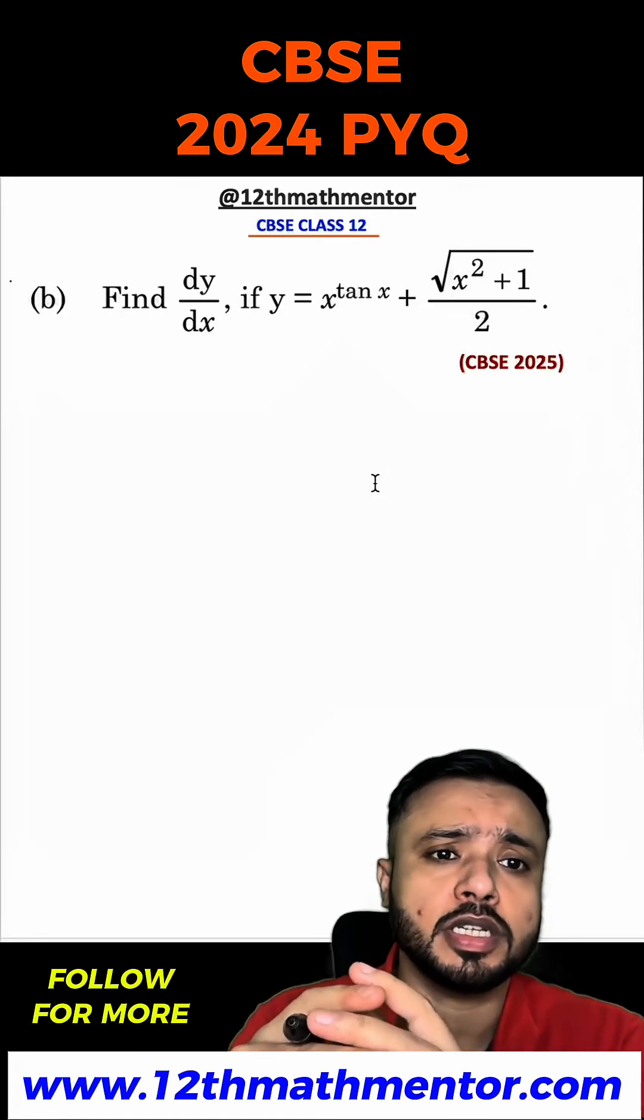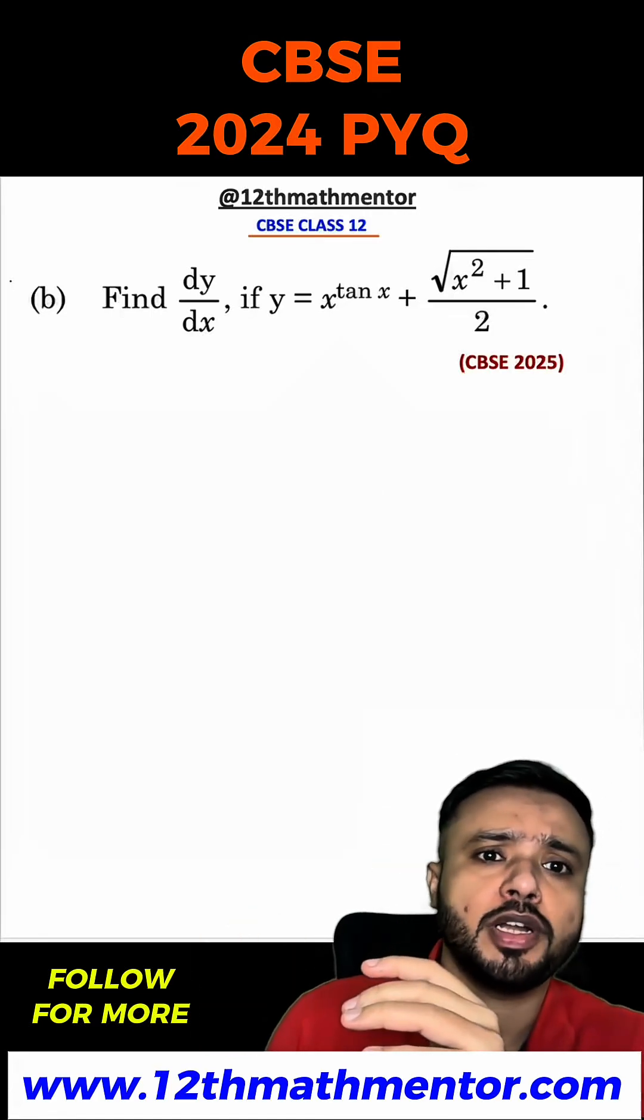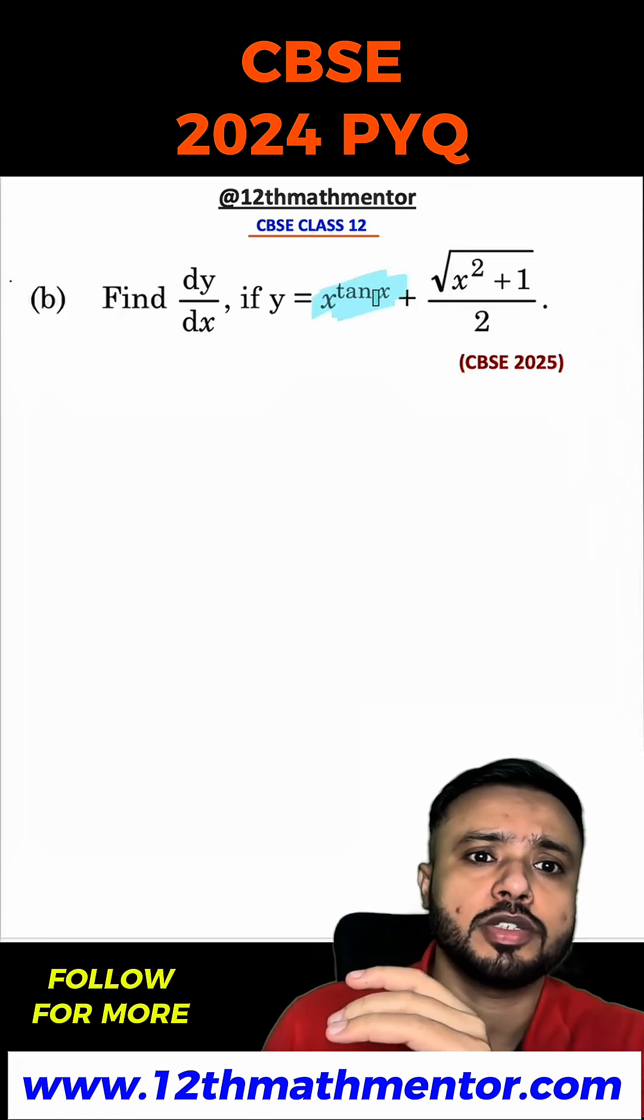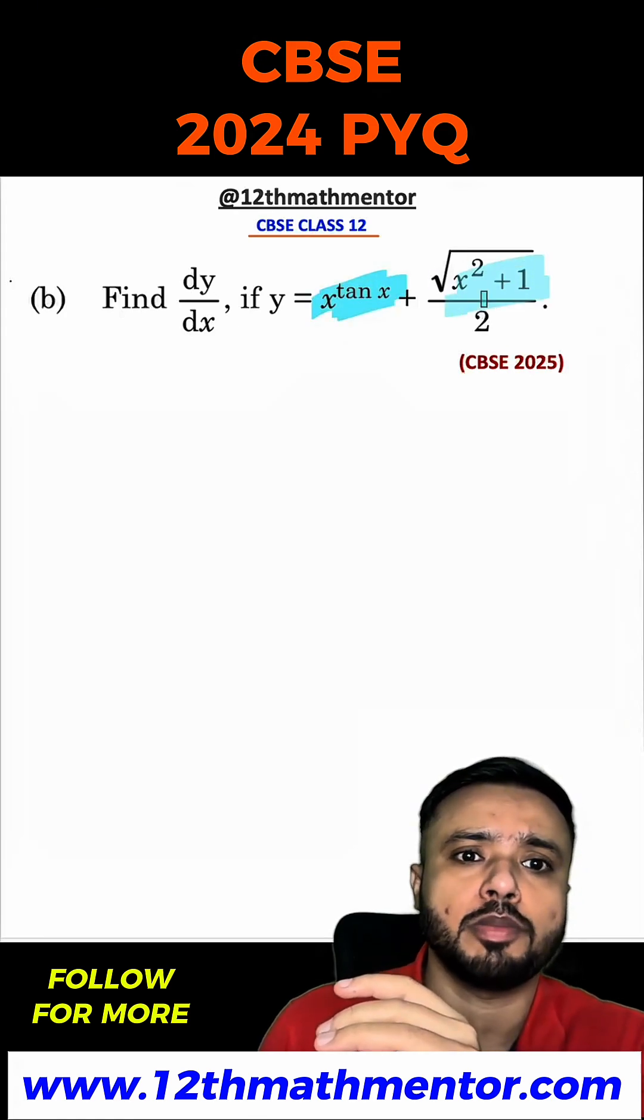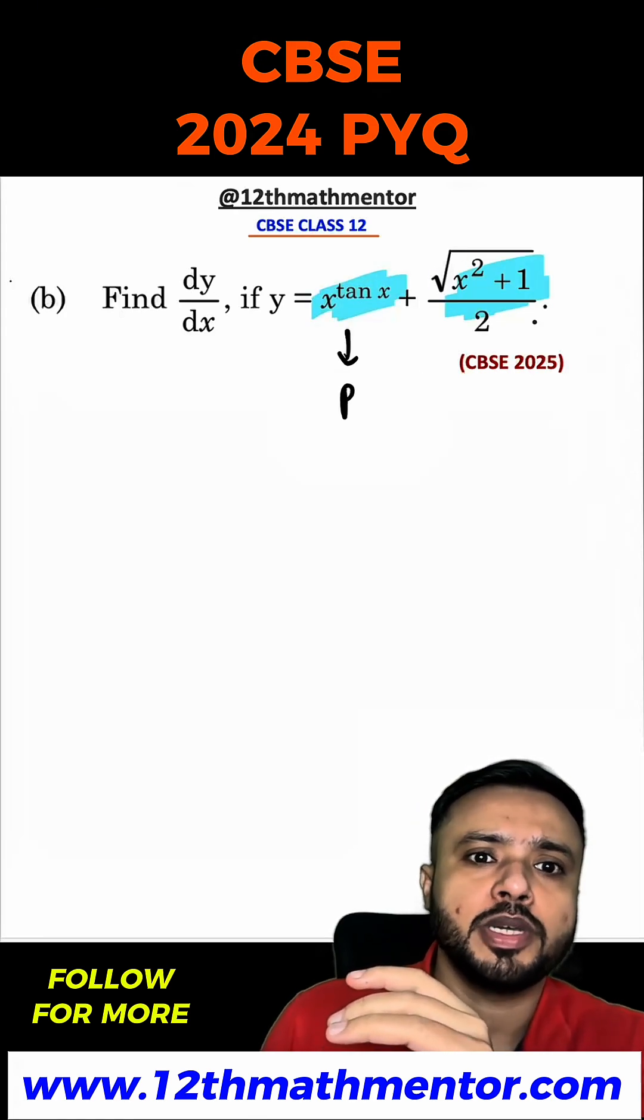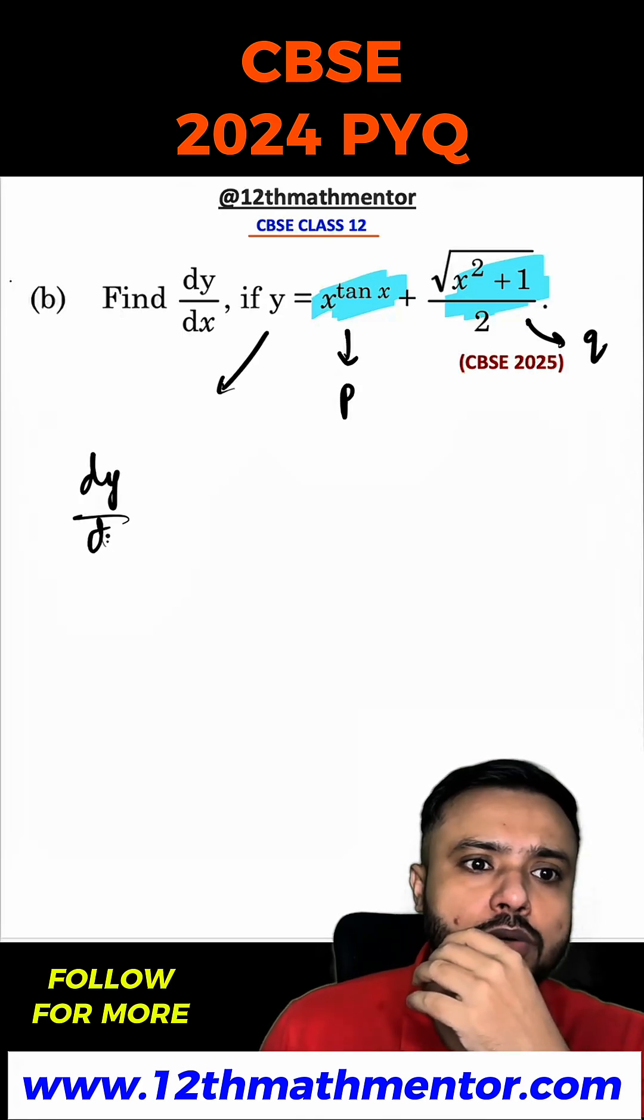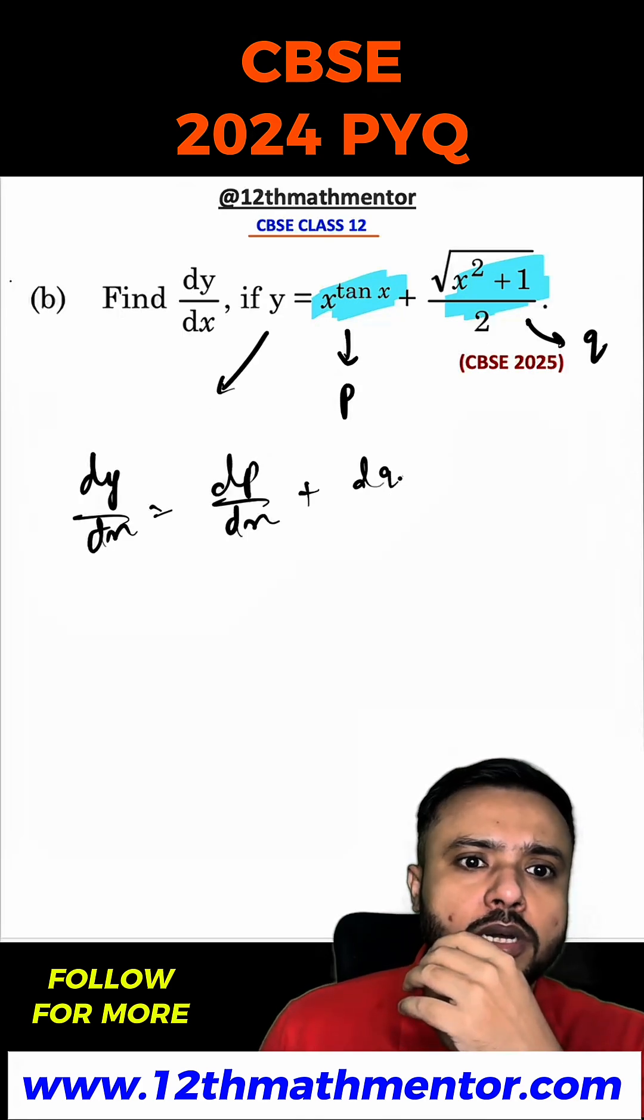How a topper solves this question within 60 seconds, let me show you. In this question we have to find dy/dx where y equals x raised to the power tan x plus √(x² + 1)/2. I will consider this as p and this part as q. So dy/dx will be equal to dp/dx plus dq/dx.